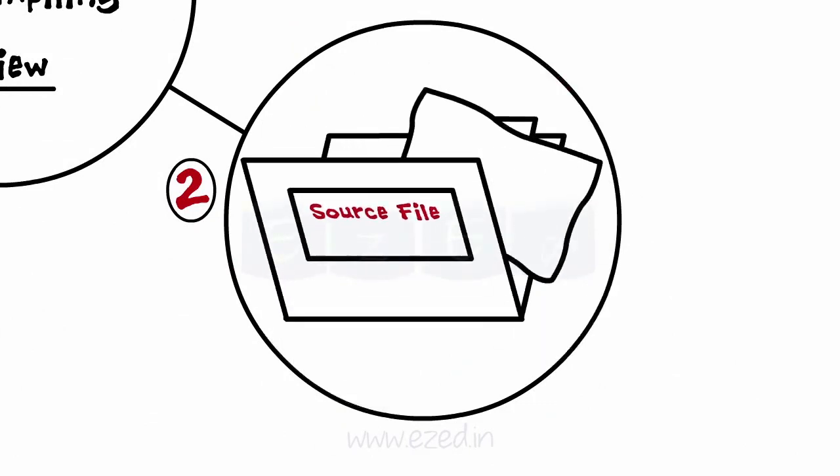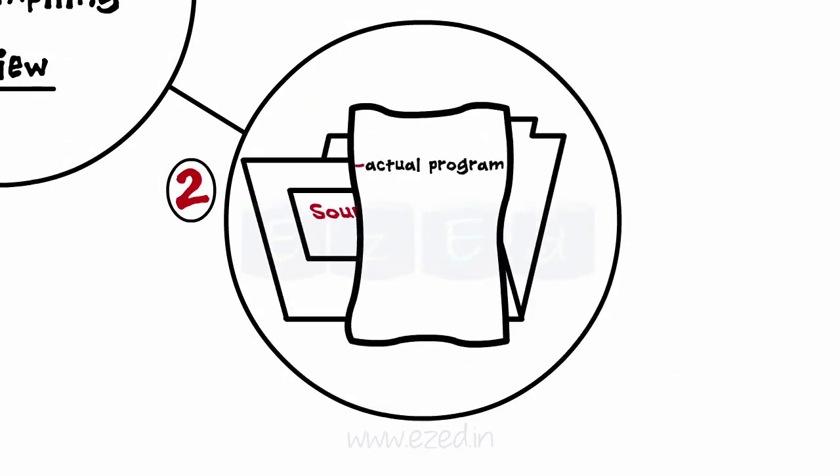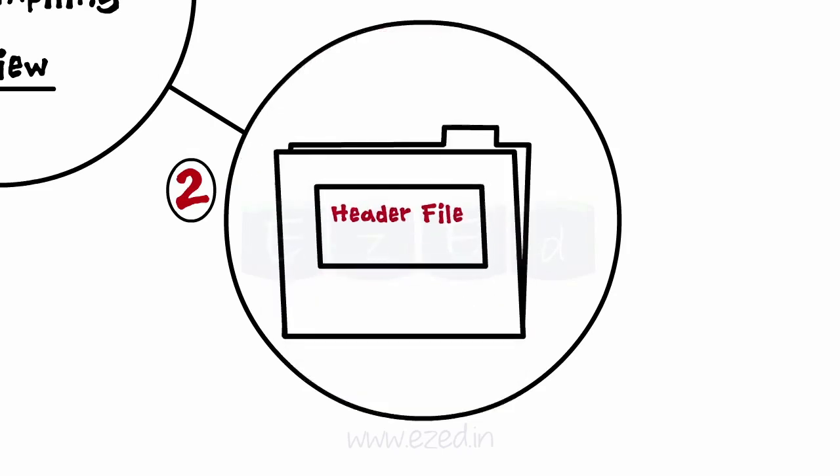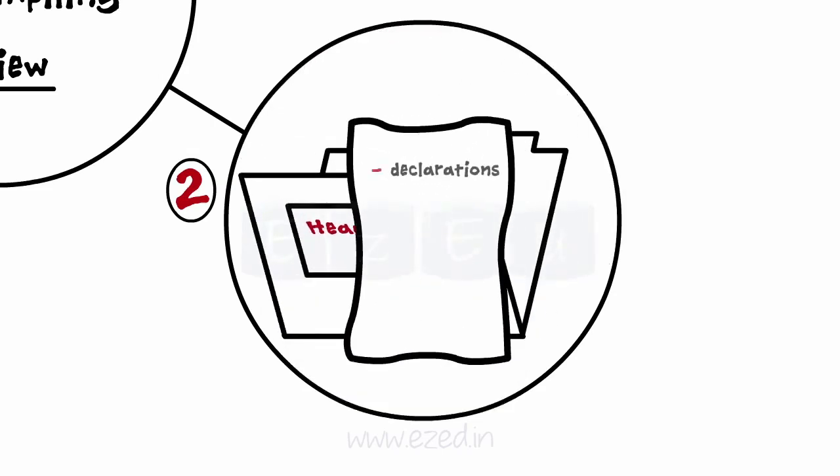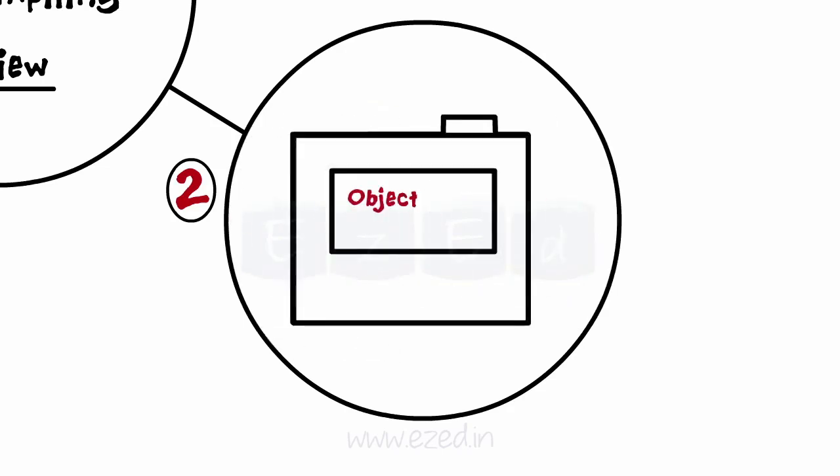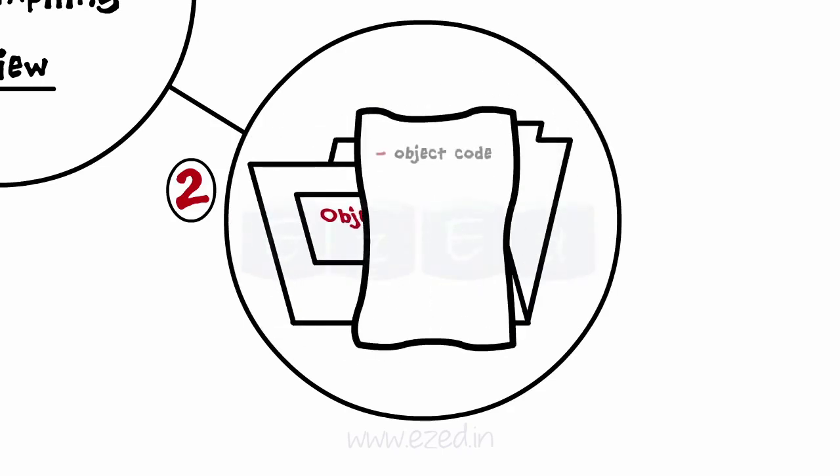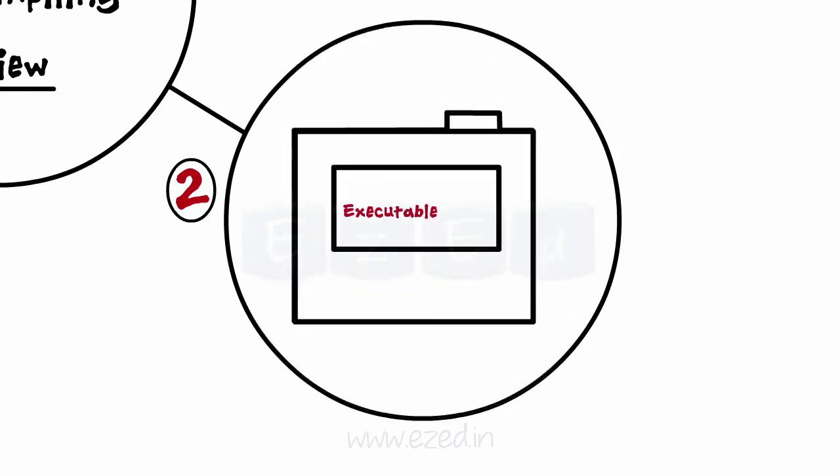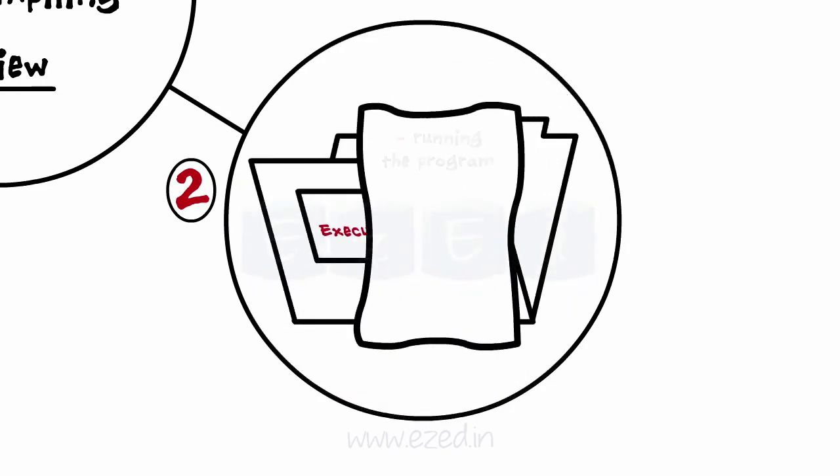Source file is the code file where the actual program is stored. Header file is one which is declared at the beginning of the program and has all the functions to be included in the program. Object file has the object code of the program, while executable file is the one which we use for running the program.